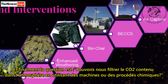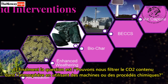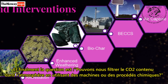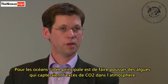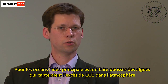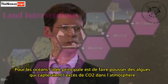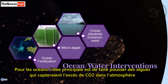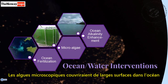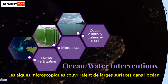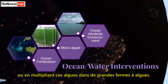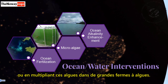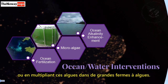And finally, the question is raised: is there a way to filter carbon dioxide out of the atmosphere using machines and chemical processes? In the oceans, the main ideas include growing more algae, which would take carbon dioxide up out of the atmosphere — either small algae over very large regions of the surface waters, or large algae in algae farms.